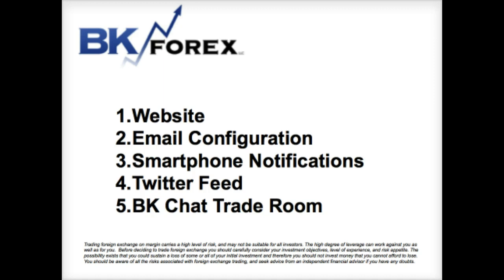First and foremost, we have five different ways to communicate with you. The primary way to get all the information BK Services provides is through our website portal, which I'll walk you through. The second most important thing when you first join BK is to properly configure your email so you can receive all of our communications sent out throughout the day. The third, and perhaps the single most important way to stay fully engaged with BK throughout the day, is to make sure you have downloaded our smartphone app.